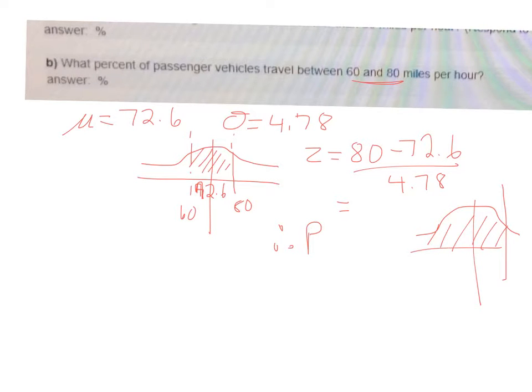And then what we want to do for the 60 mile per hour, we are going to do another Z score. And this time it's going to be 60 minus 72.6 over 4.78. And that's actually going to give us a negative Z score. And I'll let you work that out also.